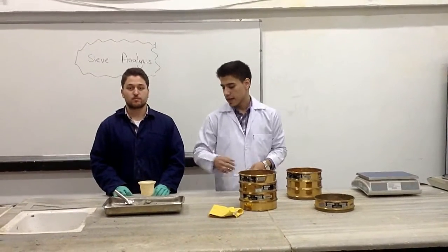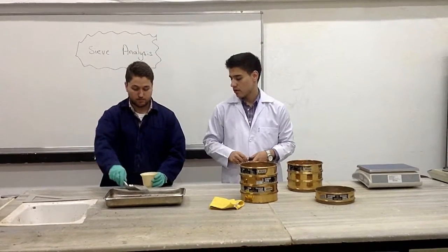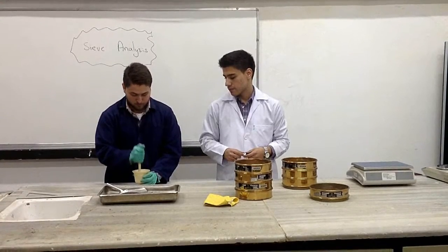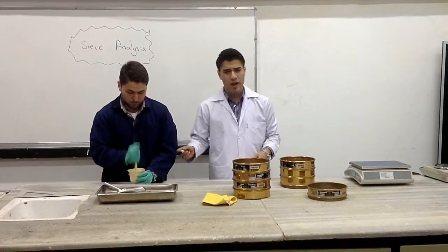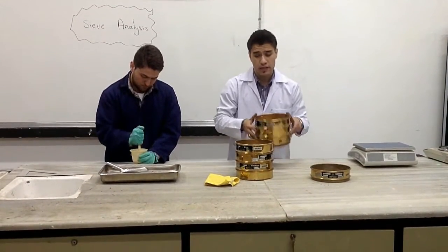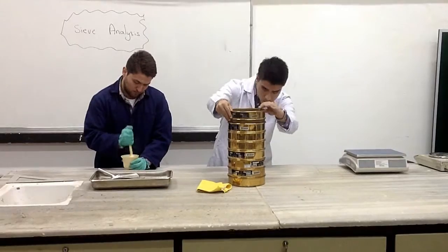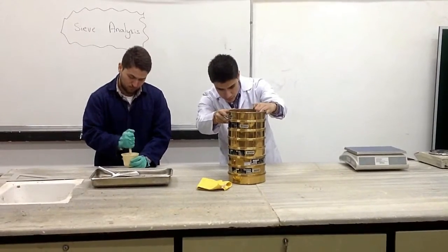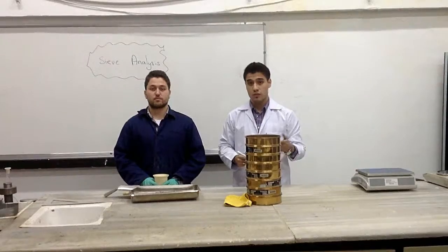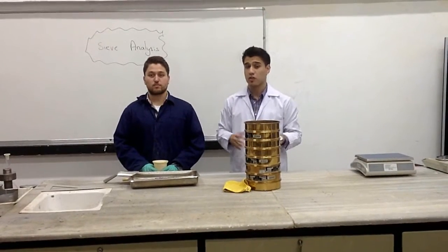So the first step is to take a sample of this oven-dried soil and put it into the rubber tip pestle, and try to break it into individual particles. While he's doing this, I'll prepare the stack of sieves from the larger openings to the smaller ones. Something we should notice is that the idea is to break the soil into individual particles, not to break the particles themselves.